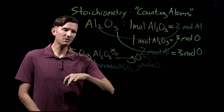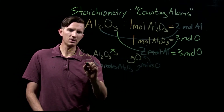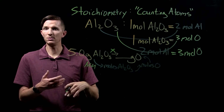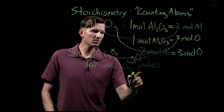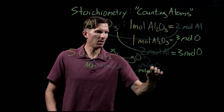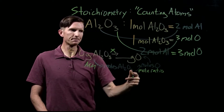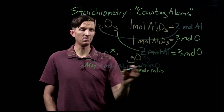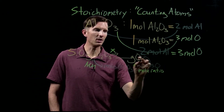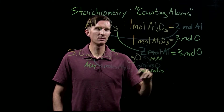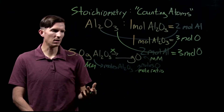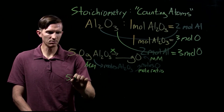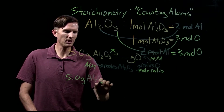From a previous video we know that going from mass to moles uses the molar mass — or for this ionic compound, the formula mass. Then, to convert between moles of different species, we use a mole ratio. The mole ratio we defined says that in one mole of aluminum oxide we have three moles of oxygen. Finally, going from moles back to mass again uses the molar mass.